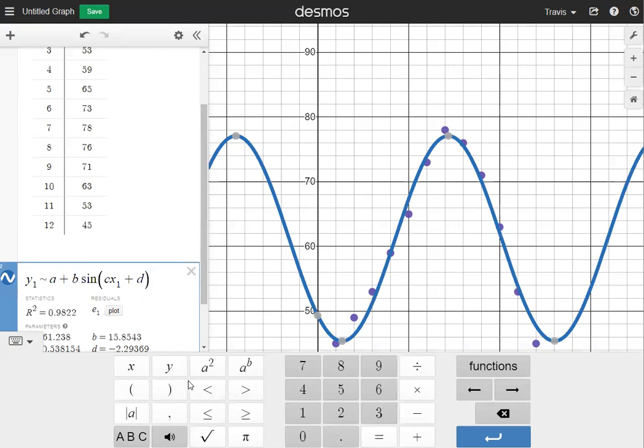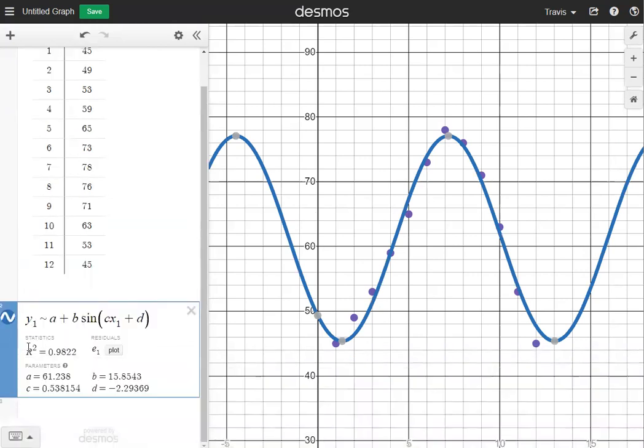And what I can do now is I can hit the keypad right here. That's going to hide the keypad. Now, how well the sign graph is going to align with the dots is going to be given by the R squared under statistics right here. And here, my R squared value is going to be 0.9822. That's fairly close to one, so you know this is going to be a good regression for our scatter plot.